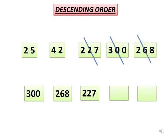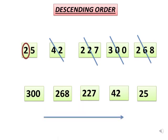Now we have 25 and 42 that are two-digit numbers. So we will compare the tens place digit of these two numbers. In 25 it is 2 and in 42 it is 4. 4 is greater, so the number 42 is greater than 25. We will write 42 in the fourth box and cross it. Now the number 25 is left, which is the smallest number, and we will write it in the last box. Thus numbers are arranged in descending order, that is from greatest to the smallest.